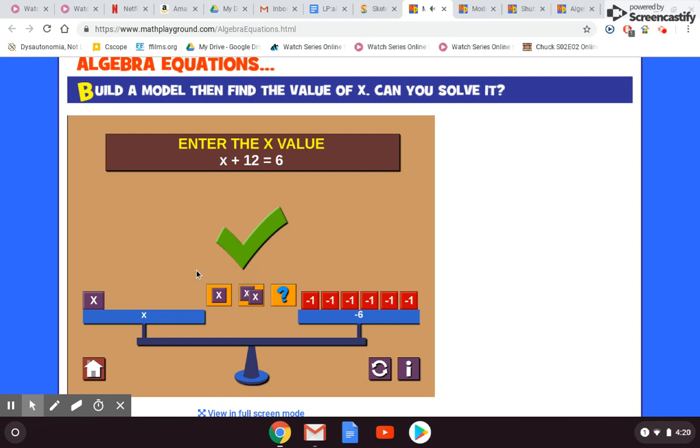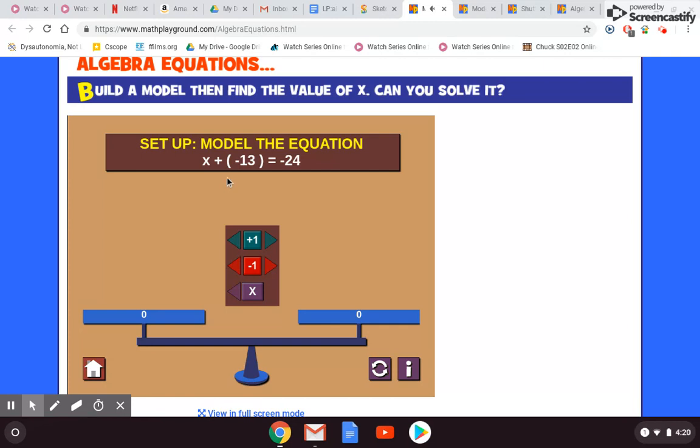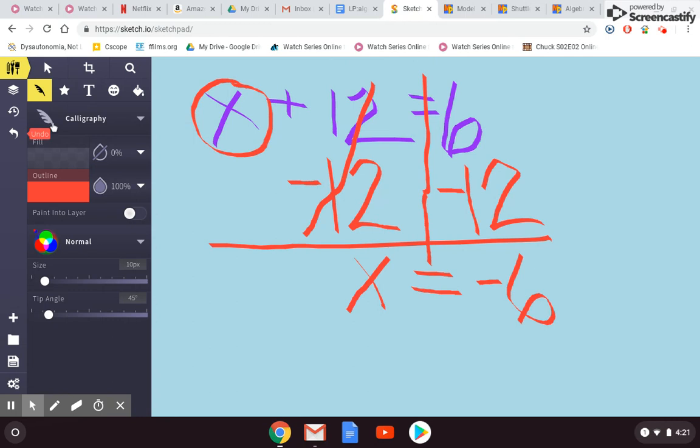Then you'll see this button down here. You'll want to do a one-step equation. That's what we're doing today. Do not do the two-step. That's actually a seventh grade concept. We're going to do the one-step equations. It will give you another one. This one looks kind of funky. What this is, is they just write it a little differently. It's really x minus 13 equals negative 24. Let's go to our paper and write that down.